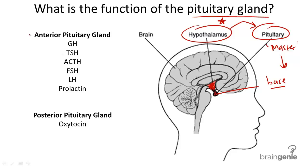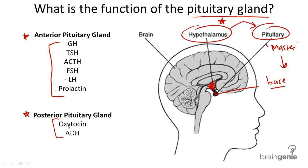The pituitary gland is divided into two major lobes, the anterior and the posterior lobe. The anterior lobe makes and secretes six different hormones: growth hormone, thyroid stimulating hormone, adrenocorticotropic hormone, follicle stimulating hormone, luteinizing hormone, and prolactin. The posterior pituitary gland makes and secretes oxytocin and antidiuretic hormone.